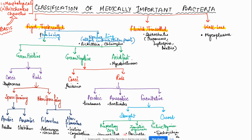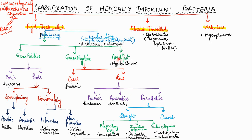Facultative gram-negative rods are classified by shape as straight or curved. Straight rods are further classified by the body system they infect: respiratory examples include Haemophilus, zoonotic examples are Brucella and Pasteurella, and enteric organisms include Yersinia and Enterobacteriaceae. The acid-fast group is another class of rigid thick-walled organisms; examples are Mycobacterium.